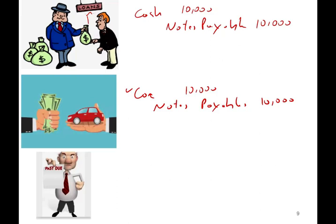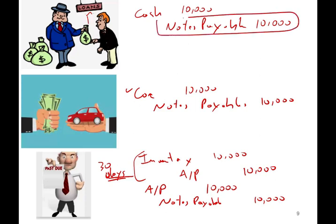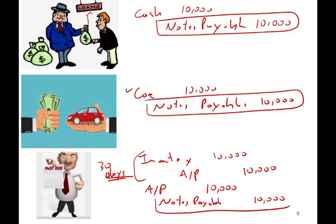The third option with notes payable is when you have an accounts payable that's due. Let's assume you bought $10,000 worth of inventory from your supplier on account, with 30 days to pay. When the 30 days came due and you didn't have the money, the supplier might say: I will replace your accounts payable — debit accounts payable and replace it with a notes payable of $10,000. So the three scenarios are: borrowing money, buying with a note, or replacing an accounts payable with a notes payable.